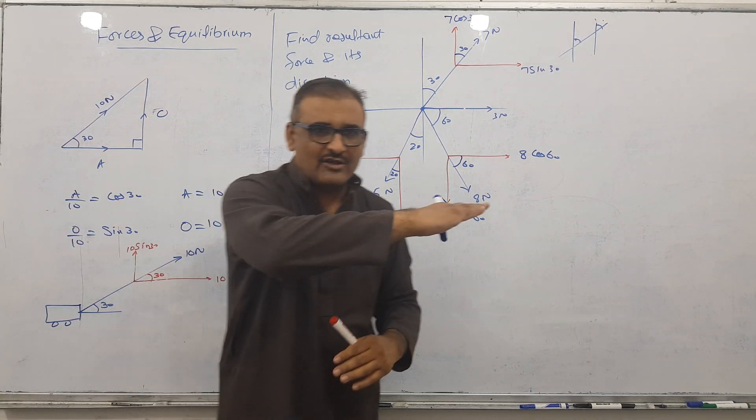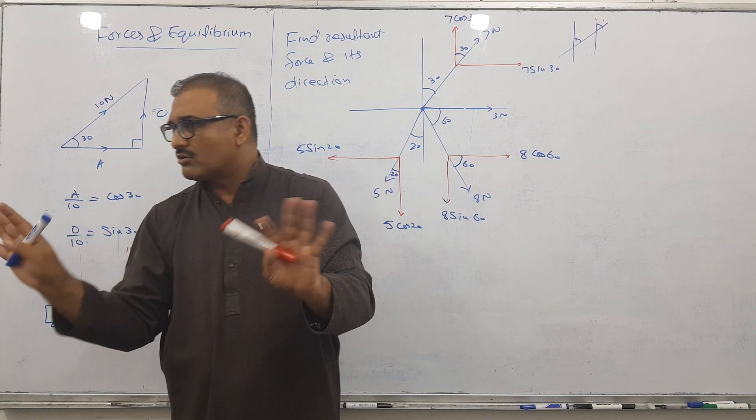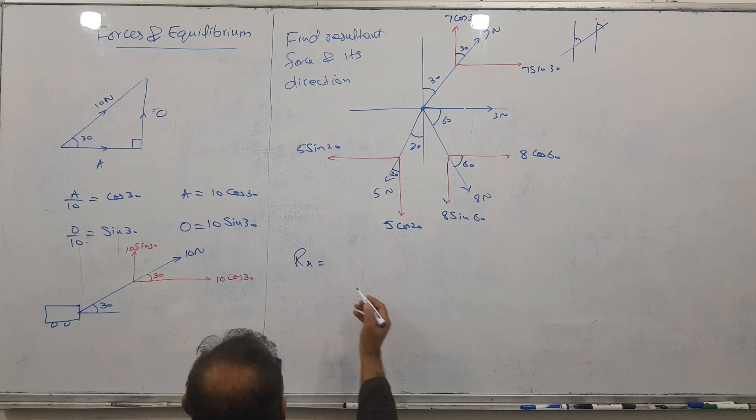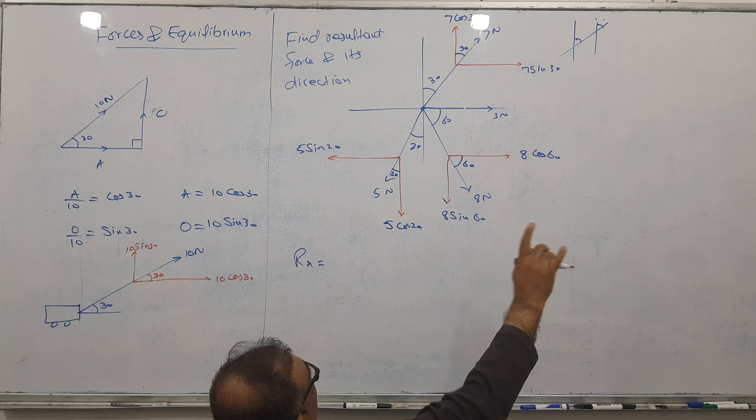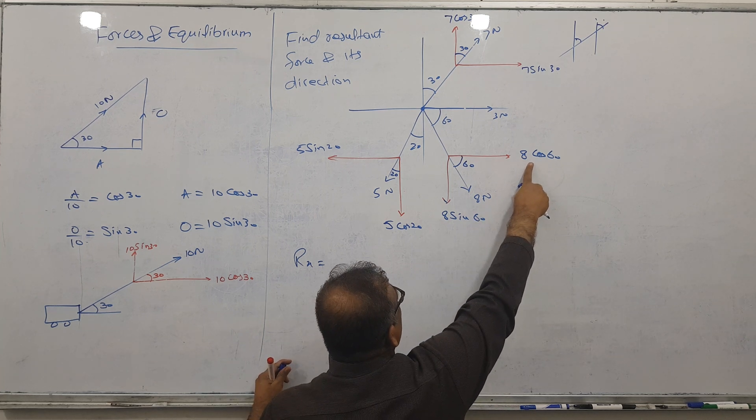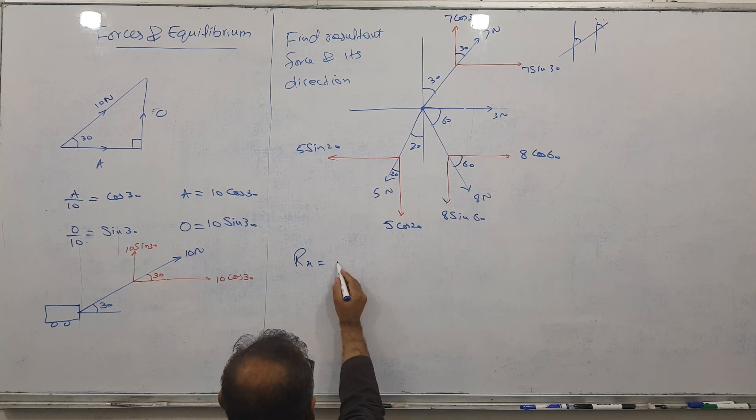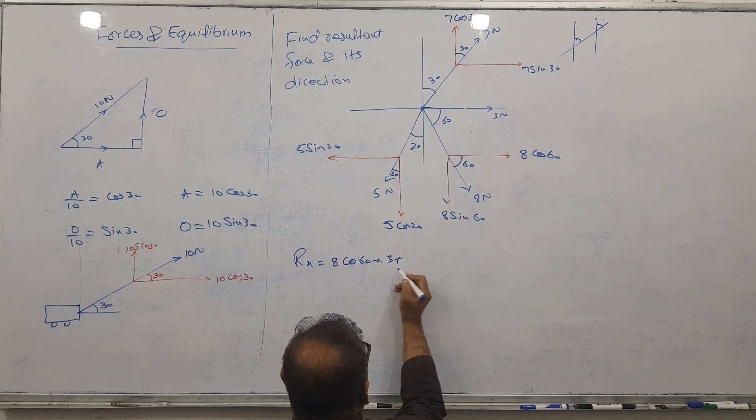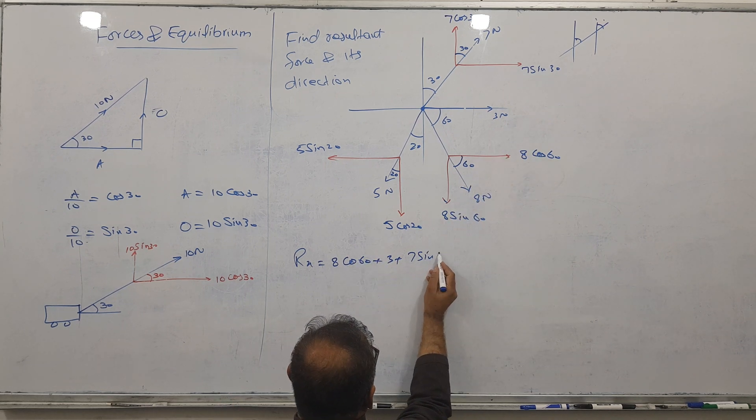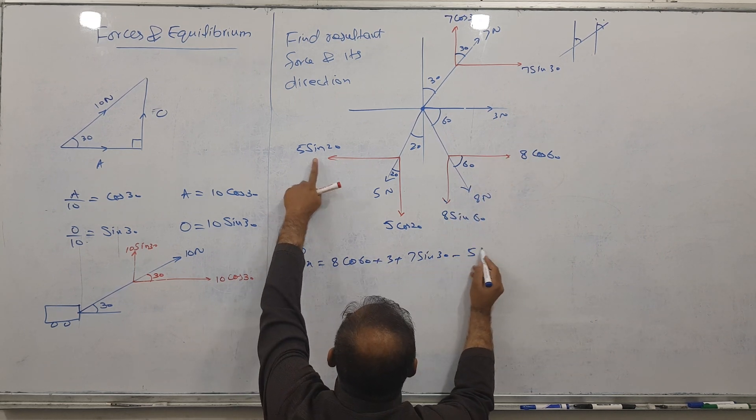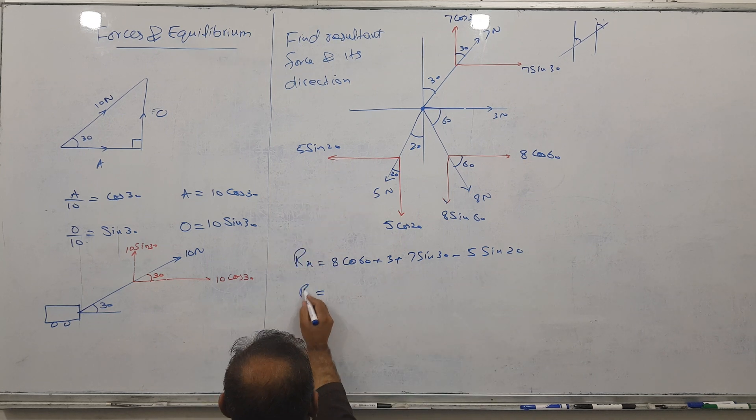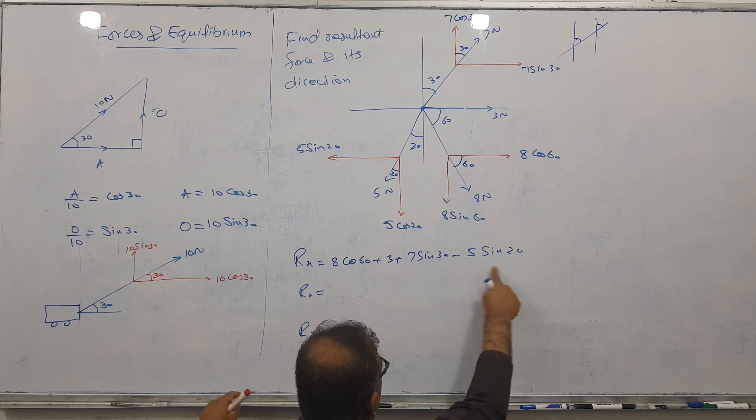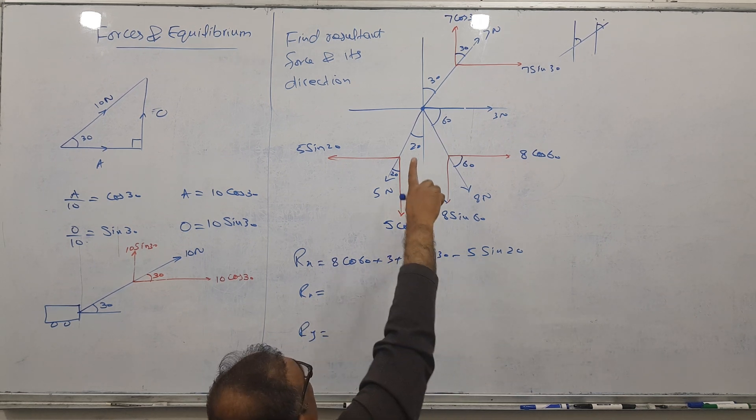Let's talk about Rx. Please take calculator and help me. Right side I will take positive: 8 cos 60 plus 3 plus 7 sine 30 minus 5 sine 20 gives Rx. Please type these values.